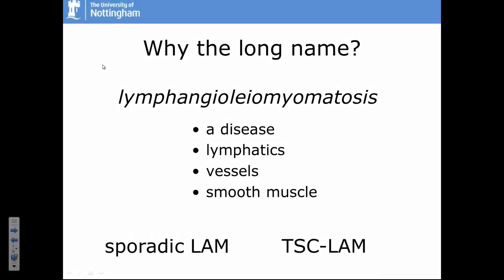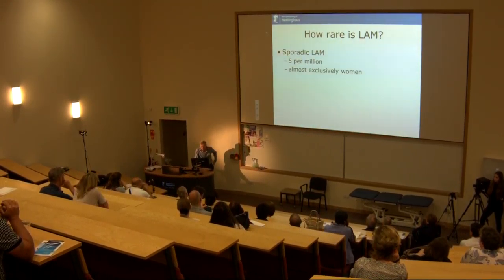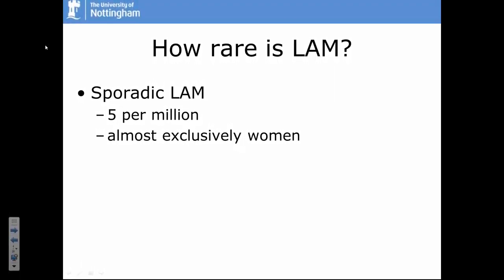The important difference between the sporadic form and tuberous sclerosis is that the sporadic form isn't a disease you can inherit or pass down through the family — it's not a genetic disease you can pass on. LAM is a pretty rare disease, affecting about five to perhaps ten per million women — not the whole population, just women — with the sporadic form.